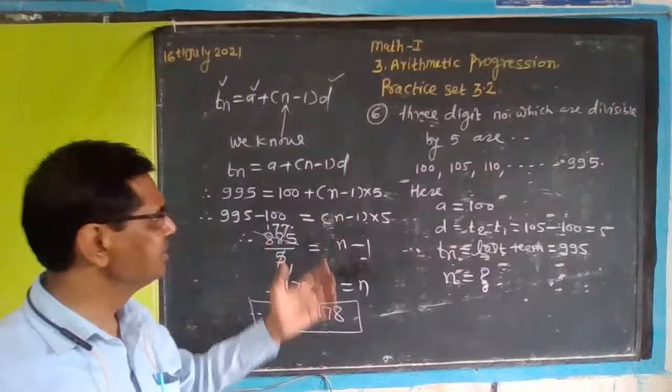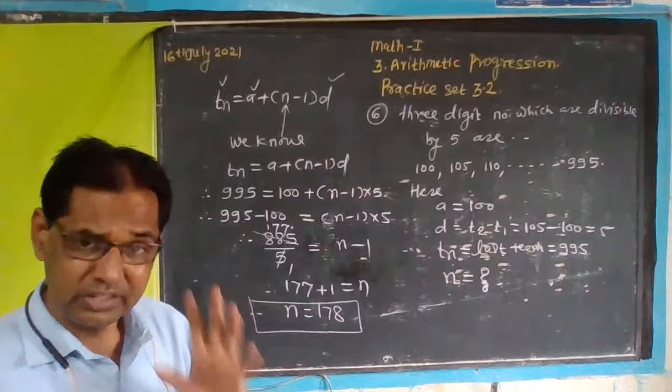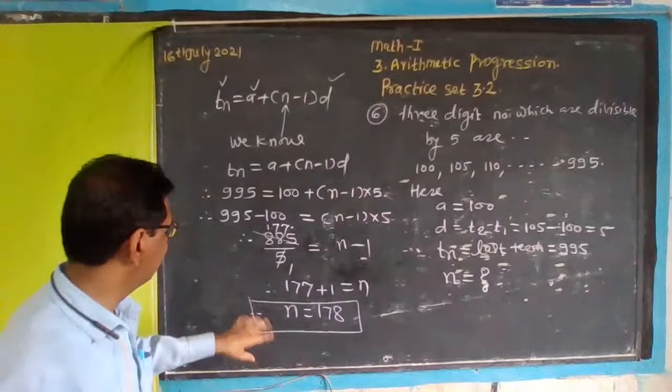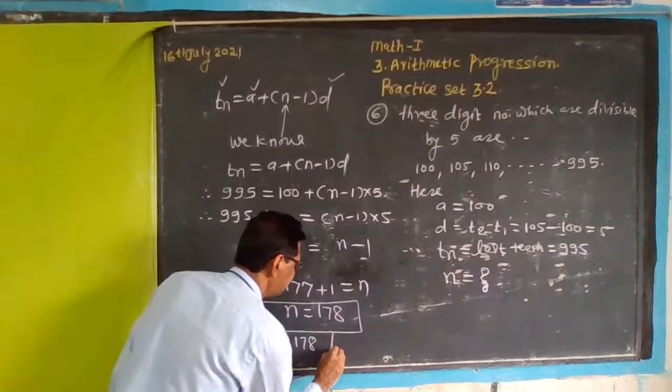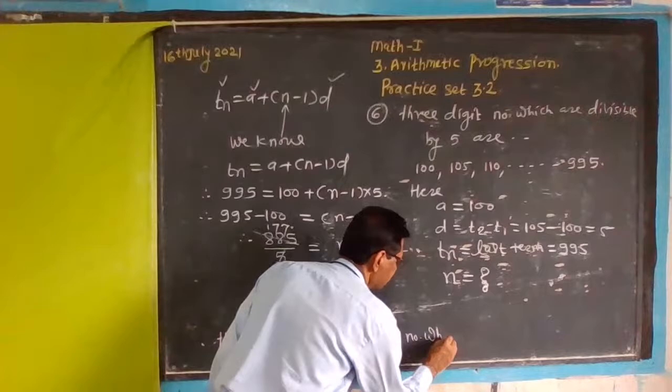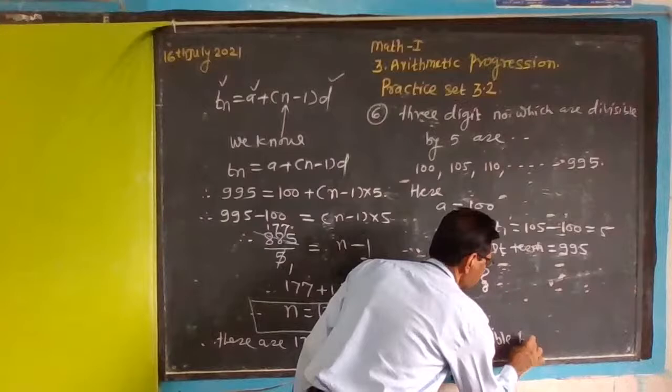There are 178 three-digit numbers which are divisible by 5. That's the answer to this problem about arithmetic progressions.